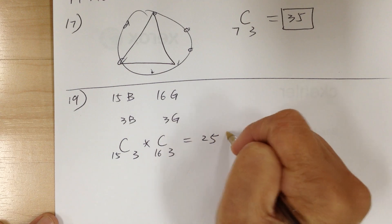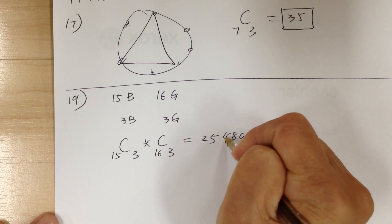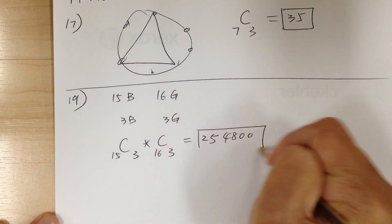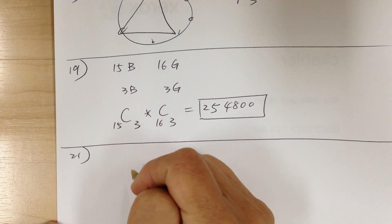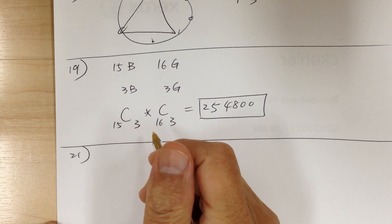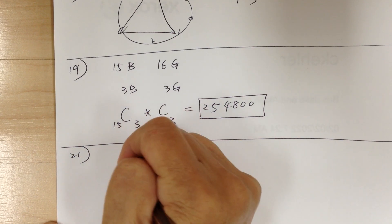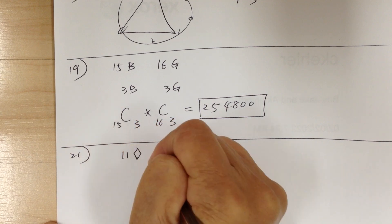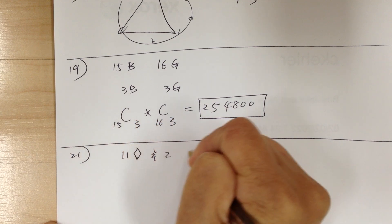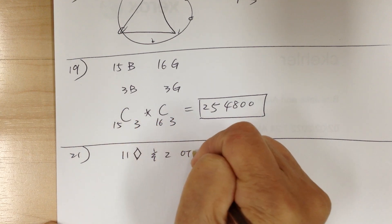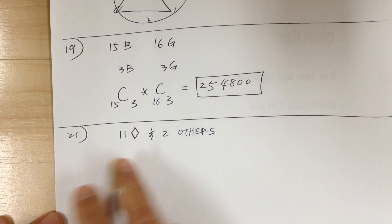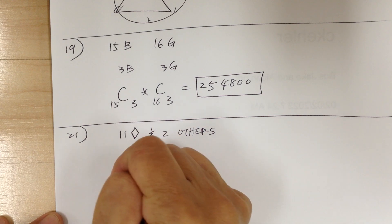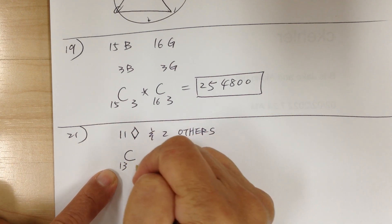Use your calculator and you get 254,800. Number 21: you have 13 cards and you want to get 11 diamonds and two others. So you want to get 11 diamonds — there are 13 diamonds in the deck of cards, and you want to choose 11.